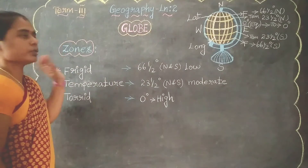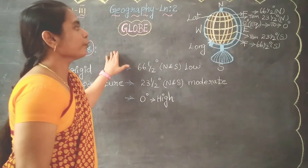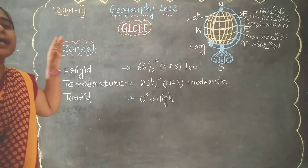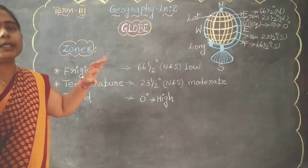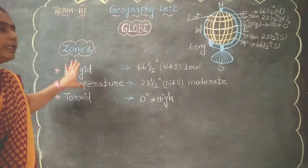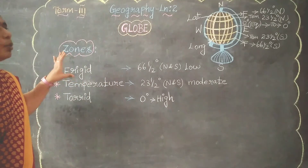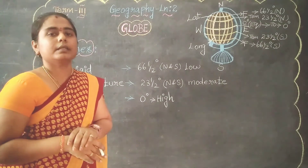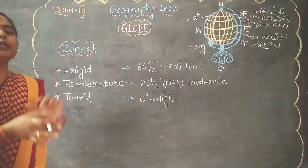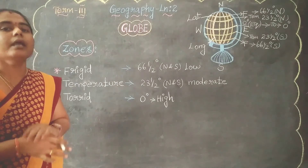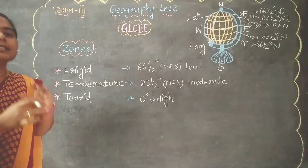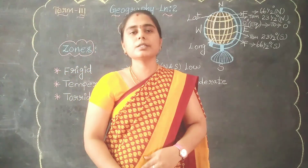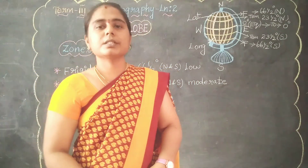That's all about the zones. These zones are used to find out the exact temperature of places. According to the places, according to the season, and according to the climatic and weather conditions, we can find out the exact temperature. We hope you all understand, students. Thank you for being a part of the session.